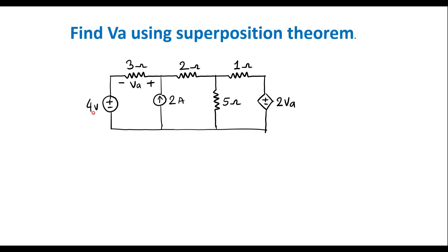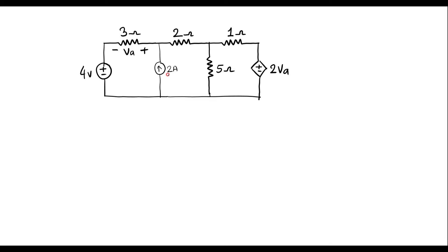When we consider the voltage source, the current source should be open circuited. When we consider the current source, the voltage source should be short circuited. So now consider the 4 volt source alone — the 2 amp current source should be open circuited. I will try to find the voltage across the 3 ohm resistor.